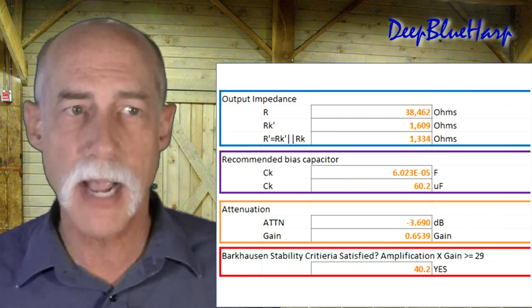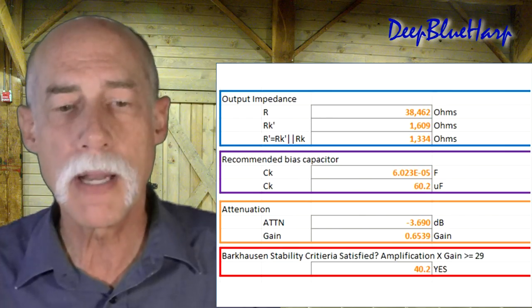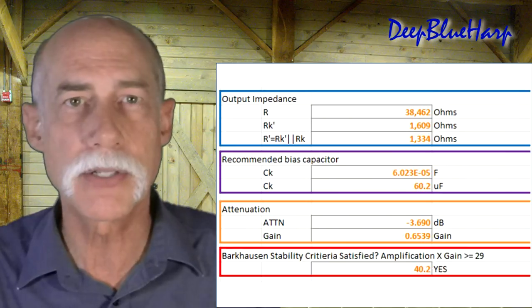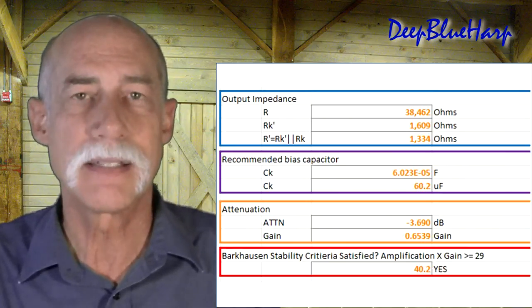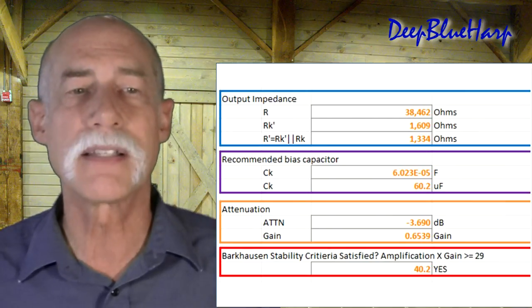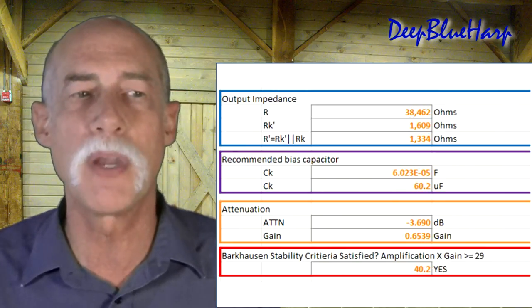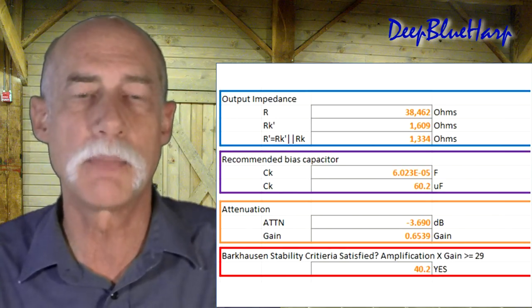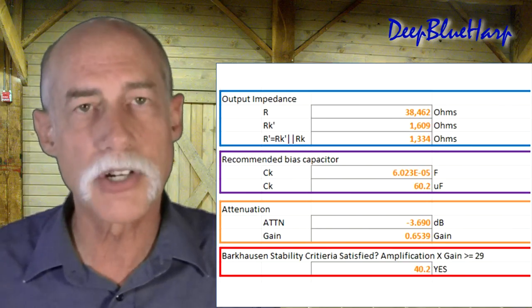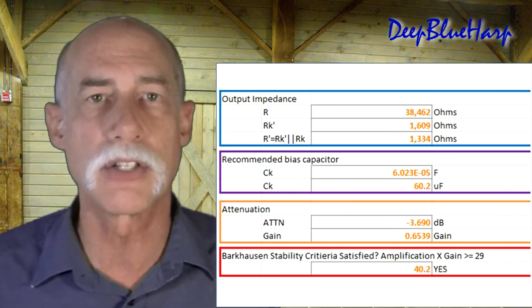The output impedance is calculated and then after we calculate the output impedance what is the recommended optimized capacitor value for the 1.9 hertz. It is shown here. It is 60 microfarads and now then it has a loss. So the loss is a 0.65 gain value. So you multiply 61 times 0.65 we have a true amplification times gain degradation value of 40. Is 40 larger than 29? That is the test that we have to go through and yes it's greater than 29. This thing should oscillate.